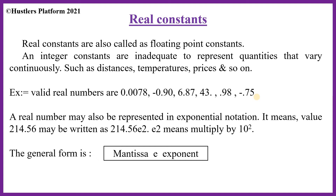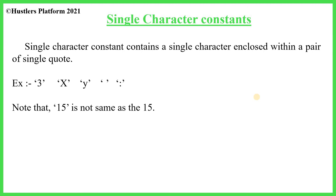Now for character constants. The first type is single character constant, which contains a single character enclosed within single quotes. For example: '3', 'X', 'y', ' ' (whitespace), ':', ';', ',' — all are single character constants. Note that embedded white space (blank space) is not allowed in numeric constants but is allowed in character constants. Also note that 15 as a number and '15' as a character constant are different — one is a constant and the other is just a digit.